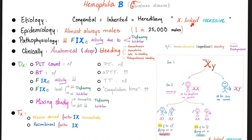Hemophilia B is congenital, inherited, and X-linked, therefore predominantly affects males — 1 in 25,000 males. Compare this to hemophilia A, which is 1 in 10,000 males. Pathophysiology: decreased factor IX activity due to deficiency or inhibitor. Clinically: deep bleeding; occasionally mucocutaneous bleeding can occur. Platelet count is normal, bleeding time is normal, factor IX activity is low. Factor IX level is low in deficiency, normal in inhibitor. Mixing study: normalizes with deficiency, does not normalize with inhibitor. PT is normal. PTT is prolonged. TT is normal because the common pathway is intact. Treatment: plasma-derived factor IX concentrate, recombinant factor IX, or factor IXa (active) if the patient has an inhibitor.